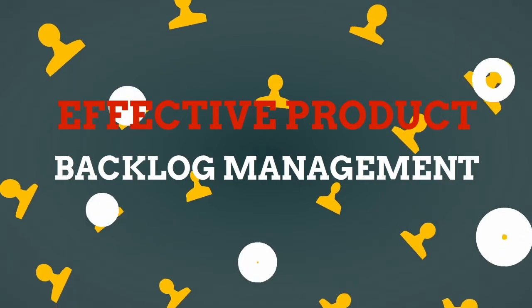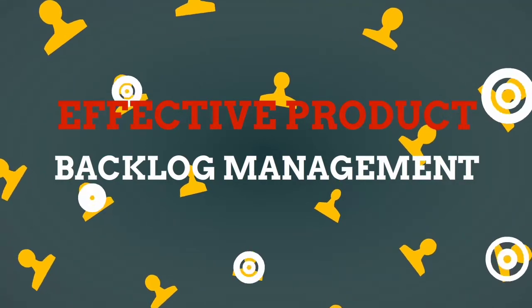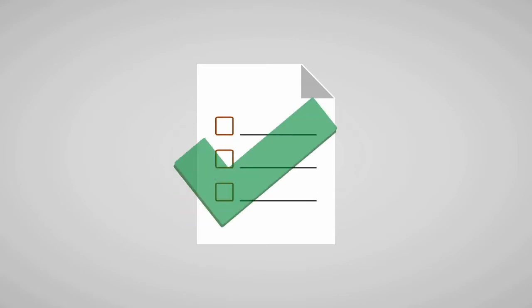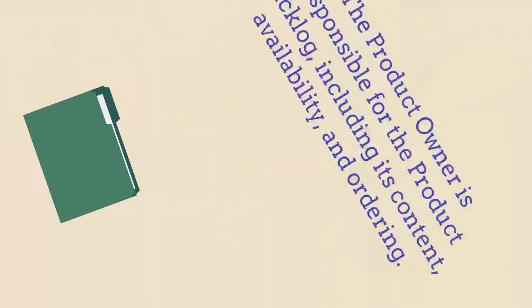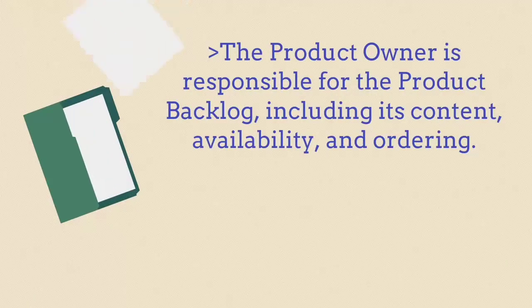Product backlog definition. The product backlog is an ordered list of everything that is known to be needed in the product. The product owner is responsible for the product backlog, including its content, availability, and ordering.